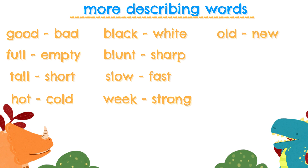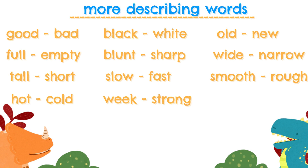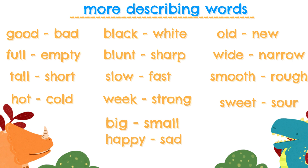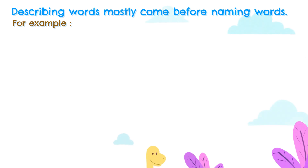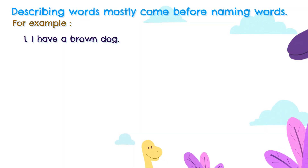Old, new, wild, narrow, smooth, rough, sweet, sour, big, small, happy, sad, heavy, light. Describing words most commonly come before naming words.